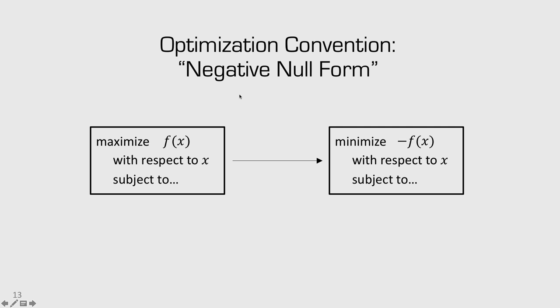As a general convention in optimization, we rewrite problems in a standard notation known as negative null form. When you have a problem where you want to maximize the value of f, we rewrite that as minimizing the negative of f. This produces the same solution — the same x value — but from now on you'll see problems presented as minimization problems.